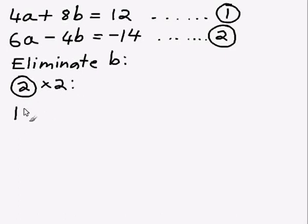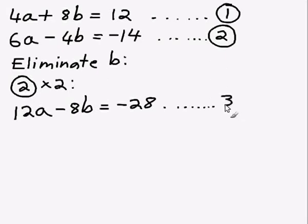So instead of 6a, I'll have 12a. Instead of negative 4b, I'll have negative 8b. And don't forget to multiply both sides. So instead of negative 14, I'll have negative 28. So now I have a negative 8b in this equation, which I'm going to call equation 3.